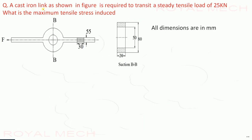A cast iron link as shown in figure is required to transmit a steady tensile load of 25 kilo Newton. What is the maximum tensile stress induced? For section BB, we have the diagram showing the cross-section.